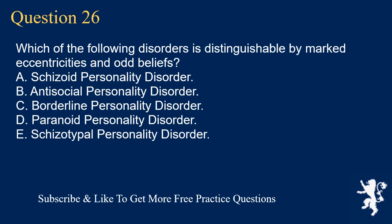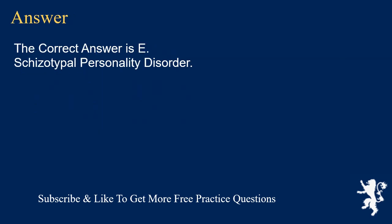Question 26. Which of the following disorders is distinguishable by marked eccentricities and odd beliefs? A. Schizoid Personality Disorder. B. Antisocial Personality Disorder. C. Borderline Personality Disorder. D. Paranoid Personality Disorder. E. Schizotypal Personality Disorder. The correct answer is E. Schizotypal Personality Disorder.